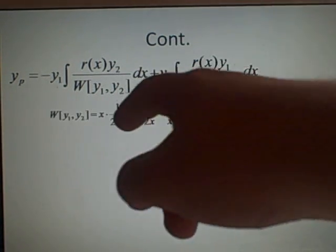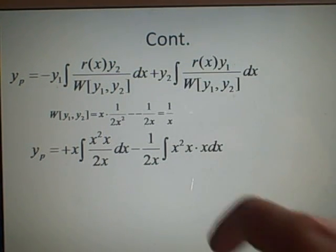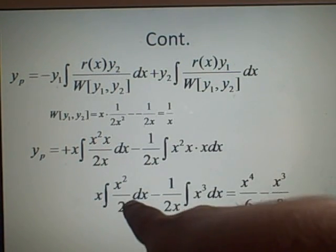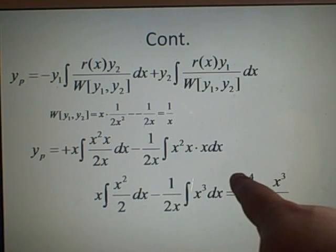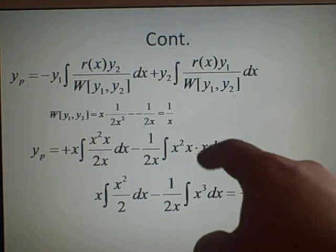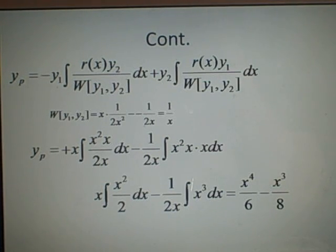That's why I've changed this to a plus. We can divide by the Wronskian so that x goes on top. Simplifying: the x's cancel or multiply through. The integral gives x to the 3 divided by 6, times the other x — so x to the 4 over 6. For the other term: x to the 4 over 4 times 2x on the bottom gives x to the 3 over 8.